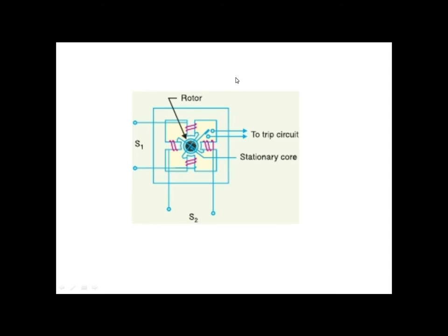It shows a four-pole structure and two pairs of coils. Suppose this coil is named one, one dash, two, and two dash. The coils one and one dash are connected, while the coils two and two dash are connected to form two pairs of coils.